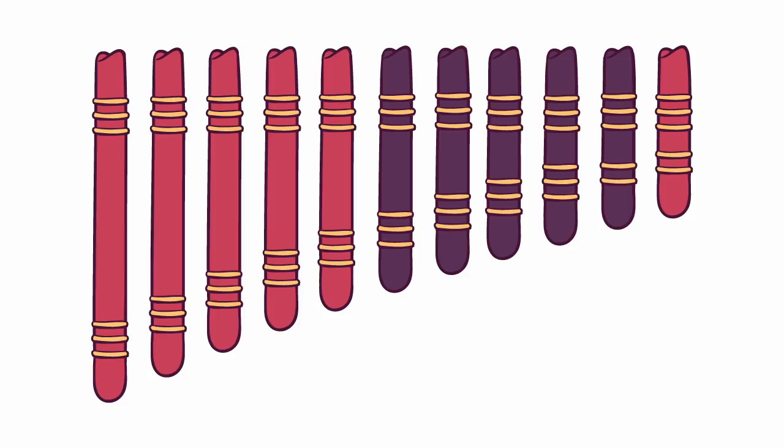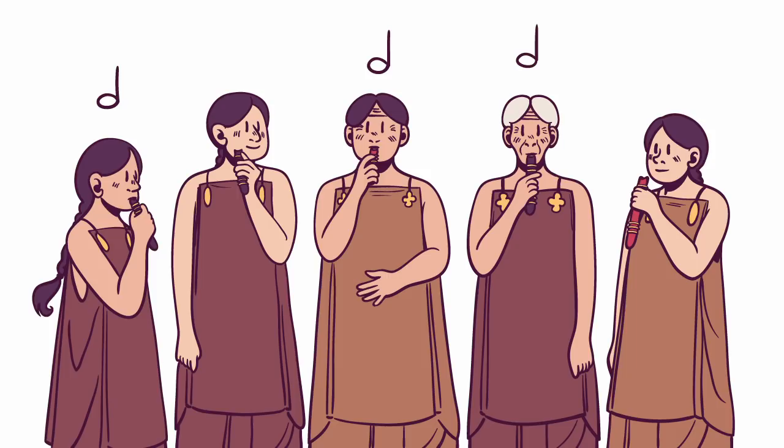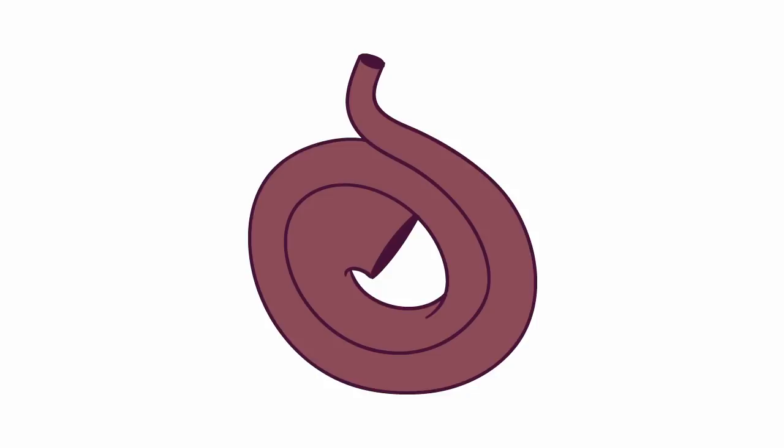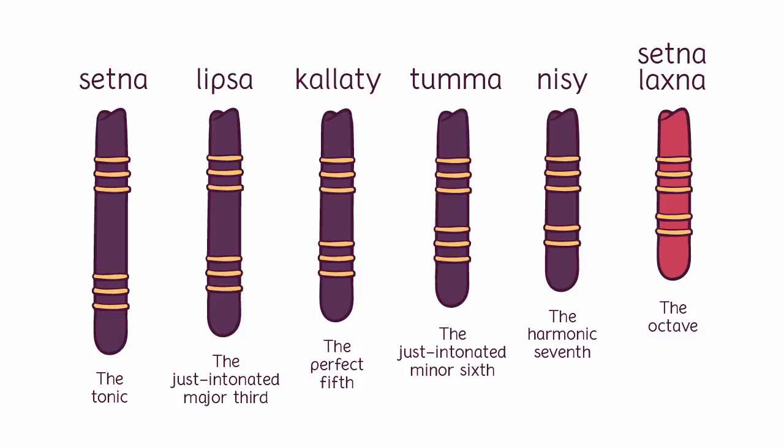Since the panpipes are responsible for the harmonies, it's important that each nun is playing in tune with each other. Depending on how hard one blows into the panpipe, it is possible to play a little bit too sharp or flat. So the nuns reference the note played on the low drone pipe when playing their own instruments, to make sure they're playing in tune. A big part of their musical training involves learning all the intervallic relationships between setna and each of the other notes in the scale, so that they can perfectly replicate them during a performance.